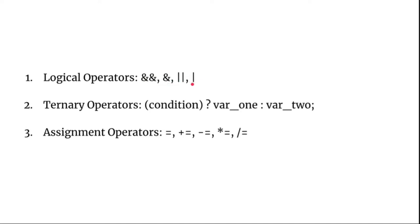The last concept to introduce is ternary operators, which are expressed using a question mark and a colon. A condition before the question mark is evaluated first, and then one of the two values after is returned as the result. Lastly, we have assignment operators like += and -=. Let's jump into the coding part.